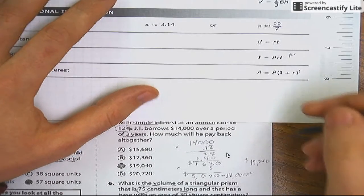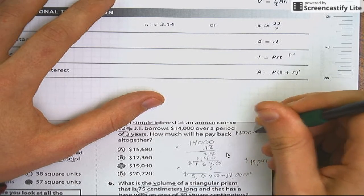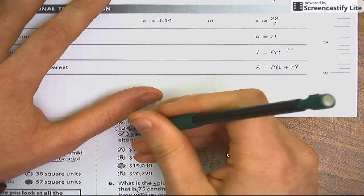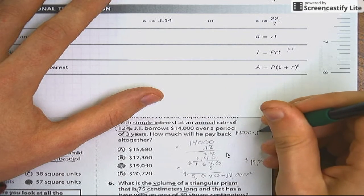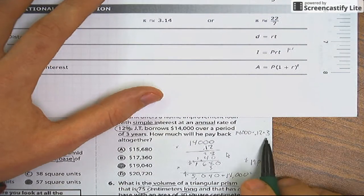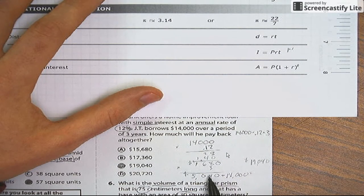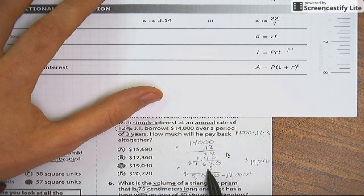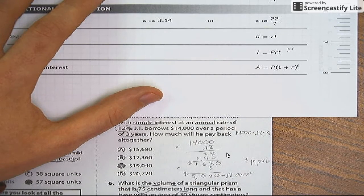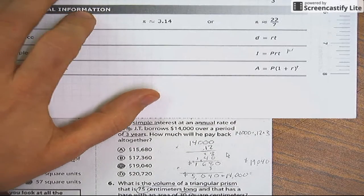Right over here. That's 14,000 times your rate, which is 0.12, times your time, which is three years. Which is what we did. 14,000 times 0.12 times three.